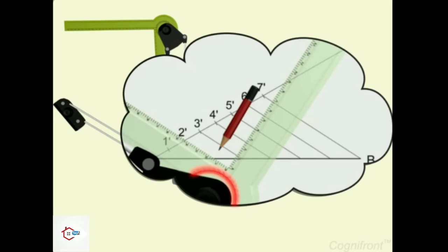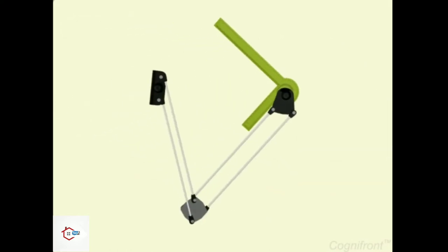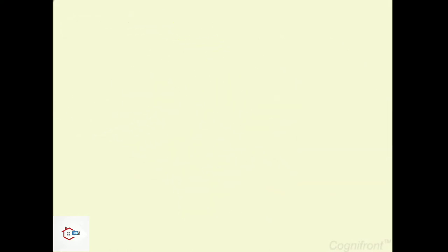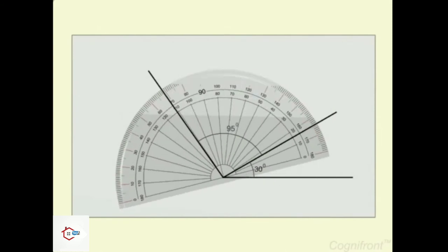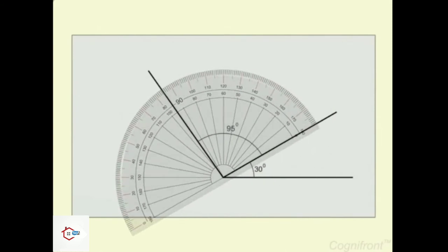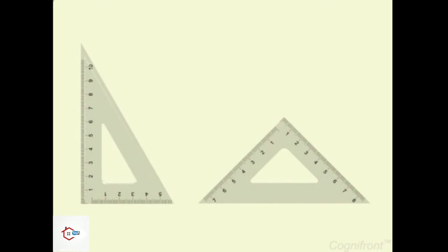It has scale as well as protractor input. Looks like a robot, isn't it? Protractor is used to measure and layout angles. Another tool is set squares, also known as triangles. They come in flavors of 30-60-90 degrees and 45-45-90 degrees.